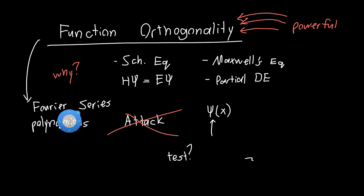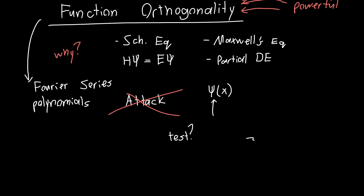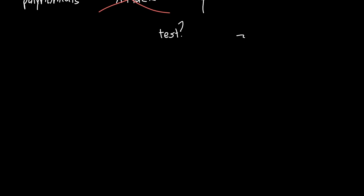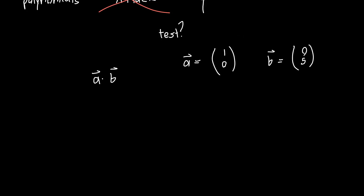If you've taken linear algebra — and I hope you have at this point, because it'll make this video considerably easier — we know that vectors can be orthogonal, and we can test for that orthogonality by taking the dot product. So let's say we've got some vector A, which we can represent as a column vector (1, 0), and B, which is some vector (0, 5), for example.